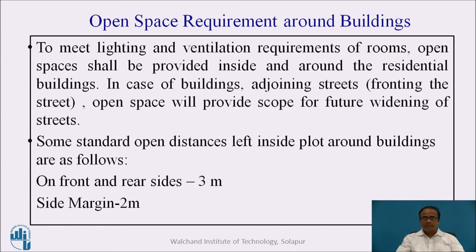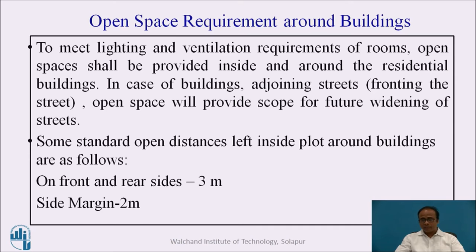Let us consider open space requirements around buildings. To meet lighting and ventilation requirements of rooms, open spaces shall be provided inside and around residential buildings. In case of buildings adjoining streets, open space will provide scope for future widening of streets. Some standard open distances left inside plot boundaries around buildings are: front and rear side 3 meters, and side margin 2 meters. This may vary from place to place and city to city.